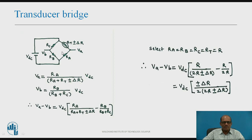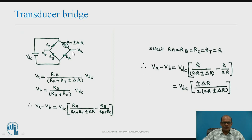The voltage generated between points A and B, which is phi A minus phi B, is given by: phi A − phi B = phi DC × (± delta R) / (2 × (2R ± delta R)). This means phi A minus phi B is directly proportional to the change in resistance, and change in resistance is directly proportional to change in temperature because the characteristics of PT100 are linear. Hence the differential output of this bridge is directly proportional to temperature.